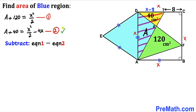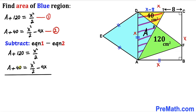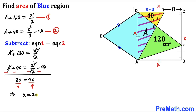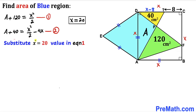Now let's subtract Equation 2 from Equation 1. After subtracting, the A terms cancel. On the left side, 120 minus 40 gives us 80. On the right side, the x²/2 terms cancel and we are left with 4x. So 80 equals 4x. Dividing both sides by 4, our x value turns out to be 20 centimeters.